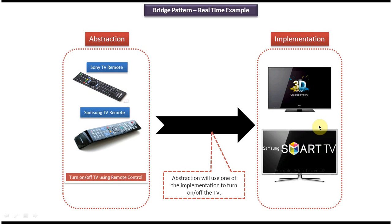Suppose later I want to add some new implementer in the implementation layer. I can do that. Suppose I want to add a new TV, say Panasonic TV. Then I can add it in the implementation layer without affecting the abstraction layer. Like that, I can add a new Panasonic TV remote in the abstraction layer without affecting the implementation layer.